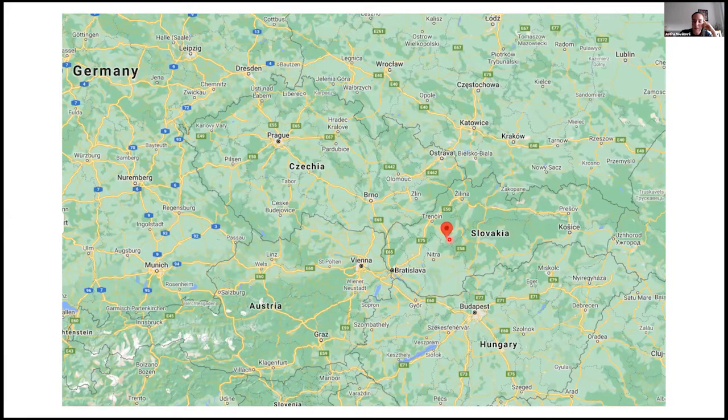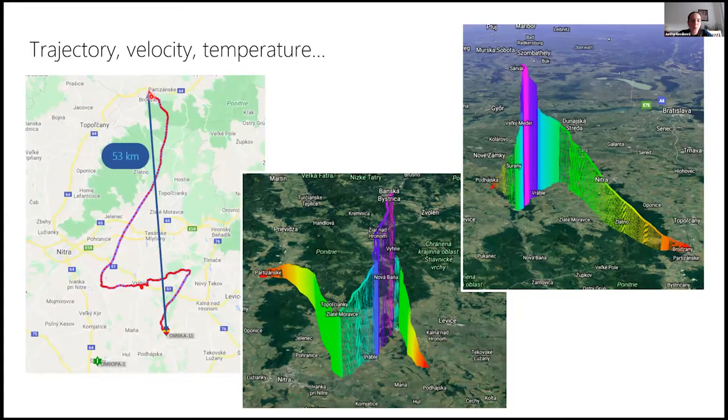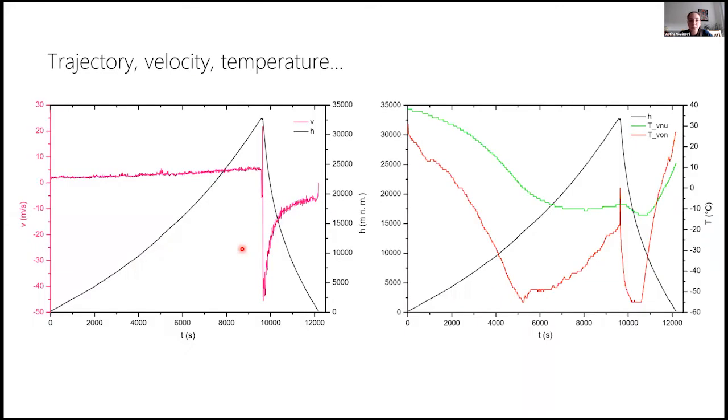We launched the view and you see it on flight already. So here is Partizánske, just so you have an image of where it is in Slovakia. And the trajectory was quite short, only 53 kilometers. Here you can see the slow ascent and quite a quick descent.